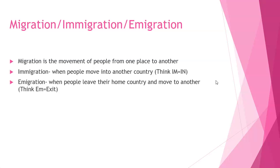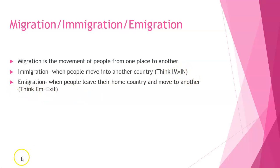Migration just means movement, and in geography we're looking specifically at the migration of people moving from one place to another. There are two types — immigration and emigration — and they sound exactly alike but are spelled differently. Immigration with an 'i' is when people move into another country — see 'i,' think 'in.' Emigration with an 'e' is when people leave their home country and move to another country — see 'em,' think 'exit.'